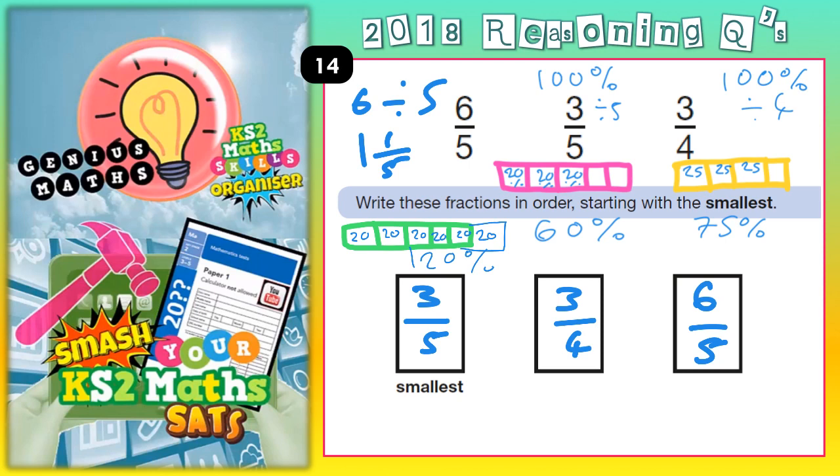So your final answer is 3 fifths is the smallest, 3 quarters is the next smallest, 6 fifths is the biggest. There is actually another way you could work this out. You could actually do a division and turn them all into decimals.